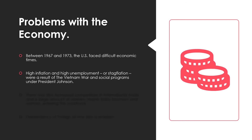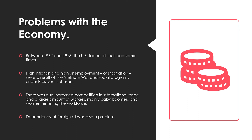Between 1967 and 1973, the U.S. faced difficult economic times. There was high inflation, high unemployment — what we know as stagflation — and this was a result of the Vietnam War and social programs under President Johnson. There was also increased international trade competition and a large number of workers, mainly baby boomers and women, entering the workforce. Many people who had grown up in the fifties and sixties were now looking for jobs or returning from war. There was also a growing dependency on foreign oil that was going to create a problem.